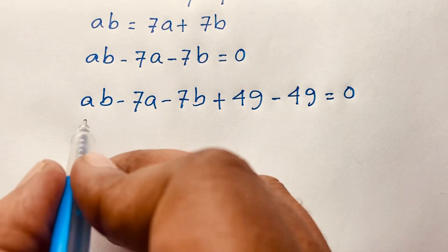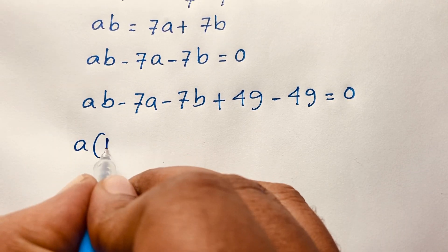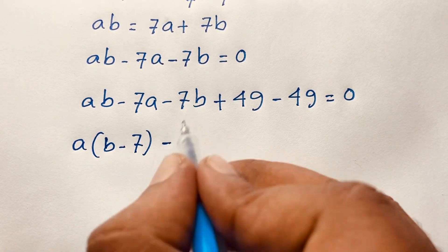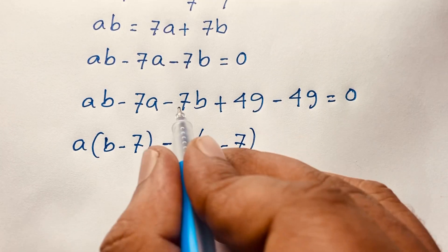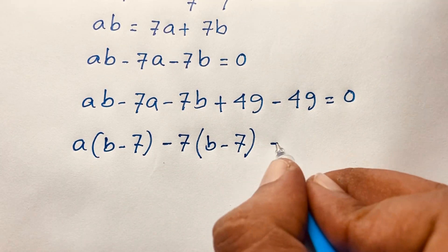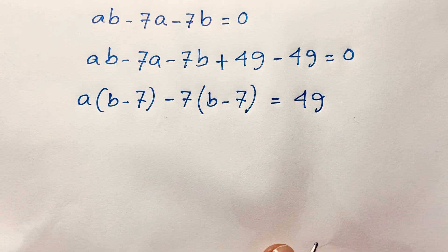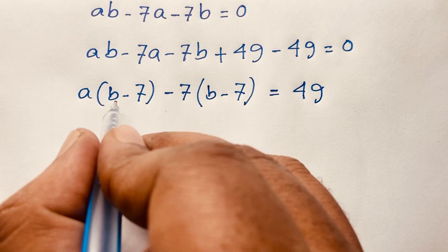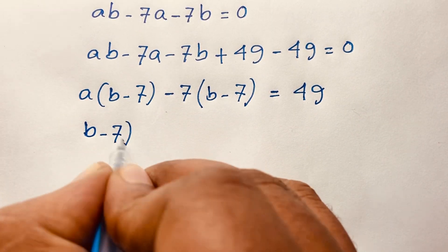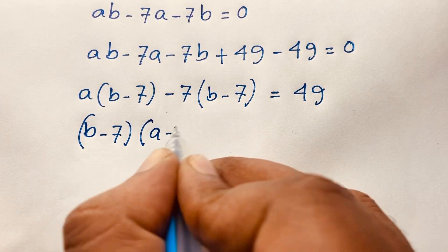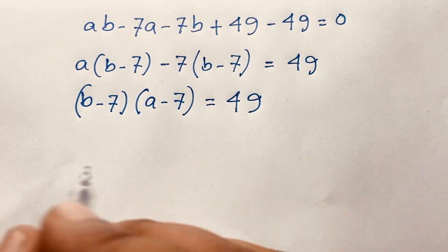Now I factor by grouping. Taking a as common from the first two terms gives a(b minus 7), and taking 7 as common from the remaining terms gives minus 7(b minus 7). Since (b minus 7) appears in both, it is common, so we get (a minus 7)(b minus 7) equal to 49.